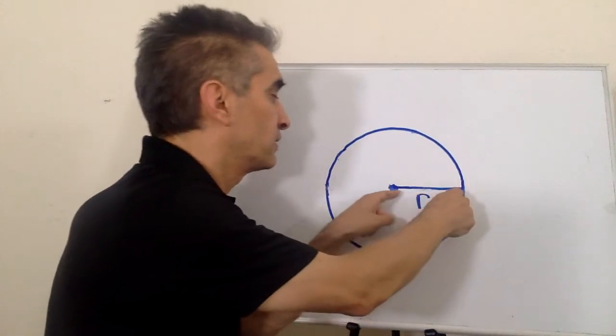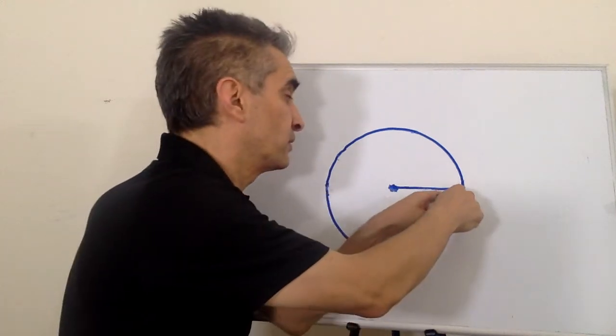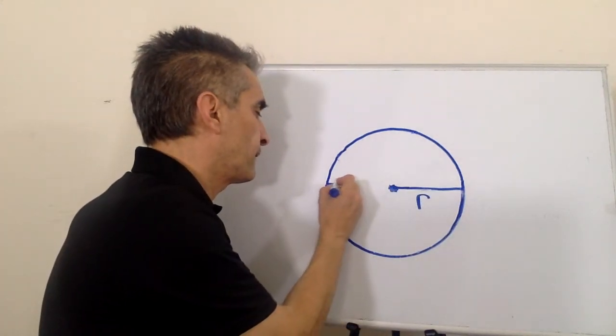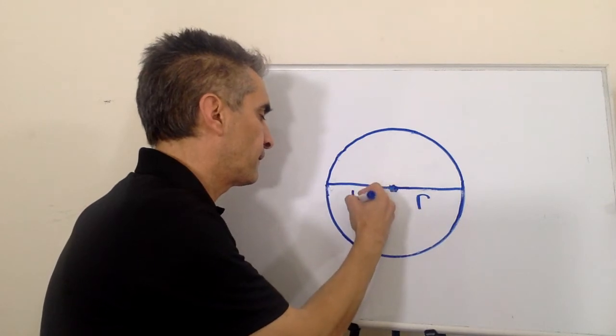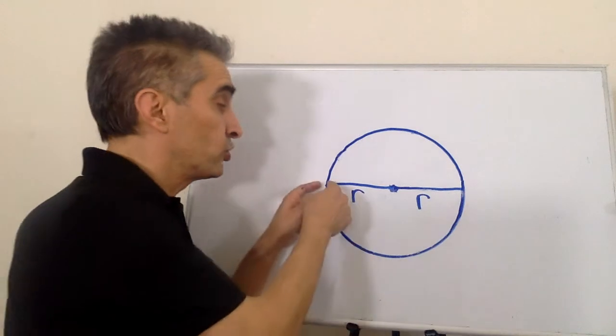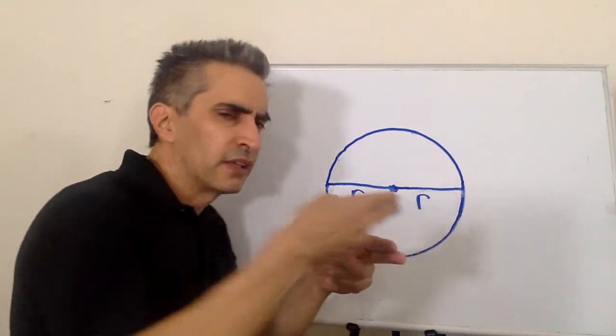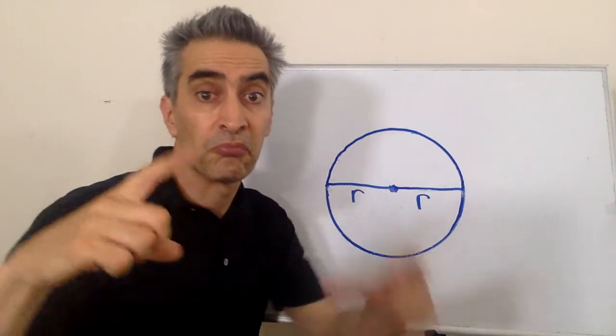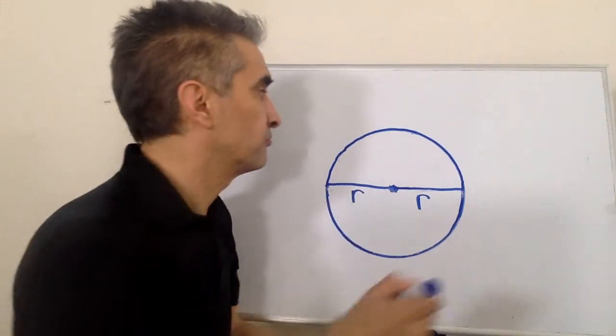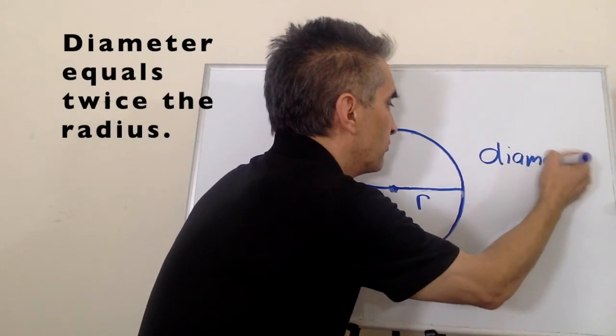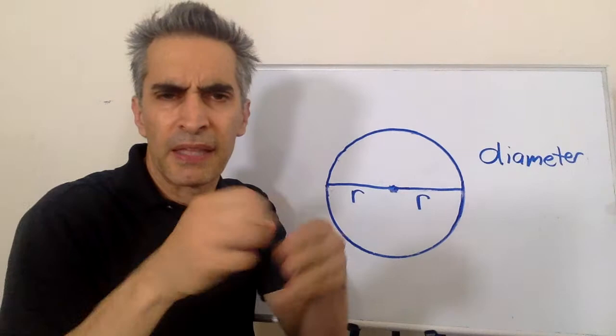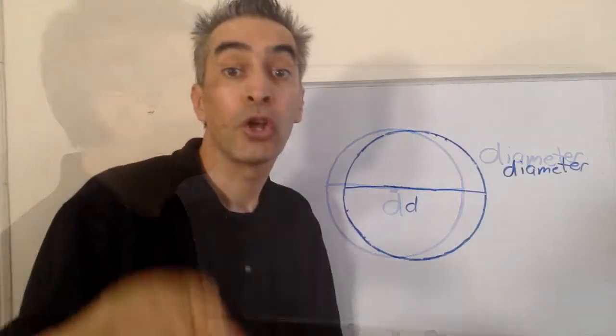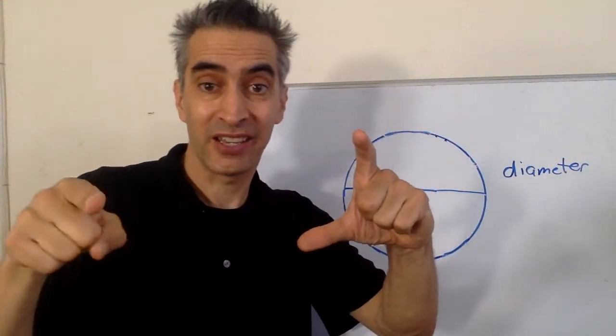Now, twice the radius or two times the radius. The distance this line forms is known as the diameter. The math symbol is a D. You can draw a diameter anywhere.